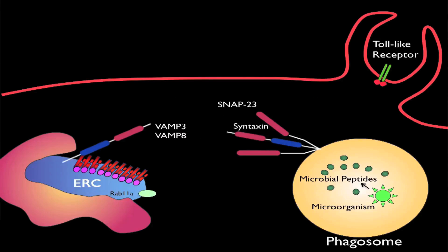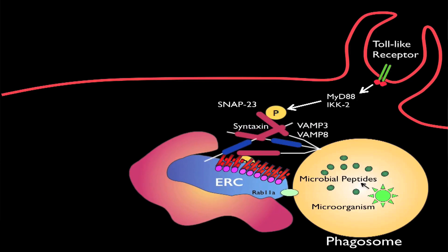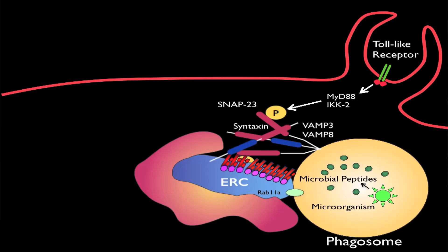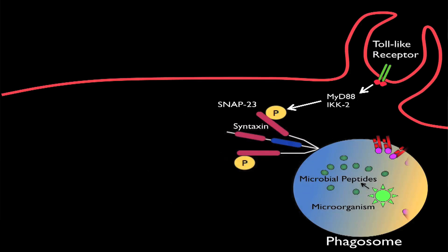Our data show that toll-like receptors phosphorylate a snare-associated protein called SNAP23, which resides on the cytosolic side of the phagosome. Upon phosphorylation, SNAP23 mediates the formation of stable snare complexes between the ERC and the phagosome. This event leads to fusion of these compartments such that now the MHC class 1 molecules and the microbial proteins are together in one and the same compartment.